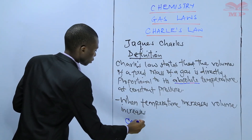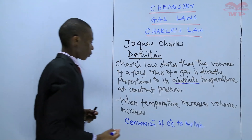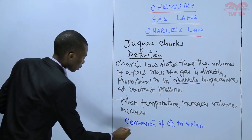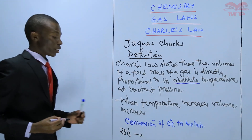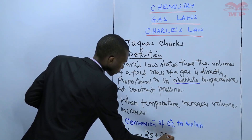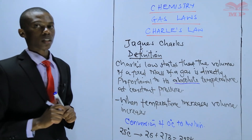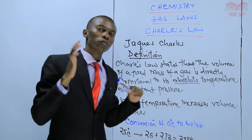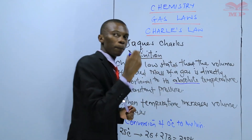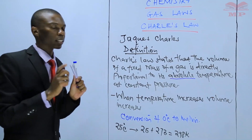Conversion of degrees Celsius to Kelvin: if you have been told the temperature is 25 degrees Celsius, then the temperature in Kelvin will be 25 plus 273, which gives you 298 Kelvin. So anytime you are doing calculations involving Charles' Law, always ensure that you convert the temperature from degrees Celsius to Kelvin.